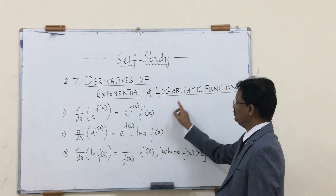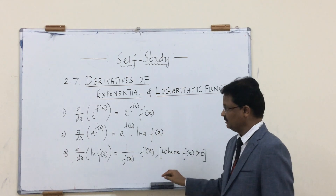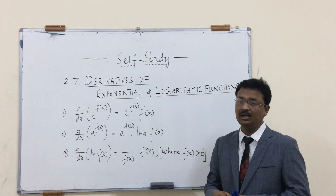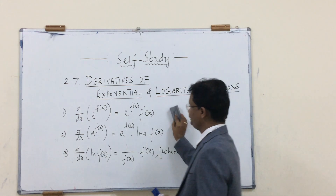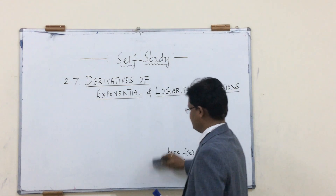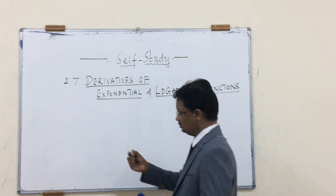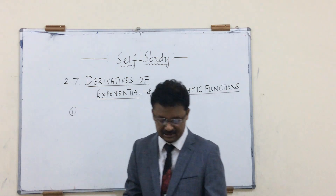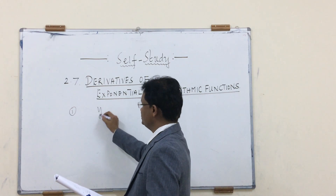The first two forms are the derivatives of exponential functions, and the third one is the derivative of the logarithmic function. Now I'm going to solve some of the problems from our exercise, starting with a simple form — a good example of a base-e exponential function.